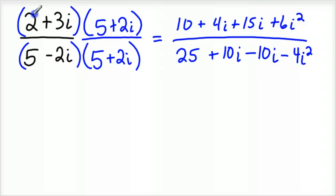So on the top, going back to the top, I took the 2, distribute it through. That's the 10 and the 4i. Then I took the 3i times 5 and the 3i times 2i. And that's the 15i and the 6i squared. And then on the bottom, I took 5 times 5 is 25. 5 times 2i is 10i. Negative 2i and 5 is negative 10i. And negative 2i and 2i is negative 4i squared.